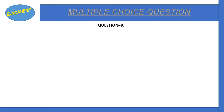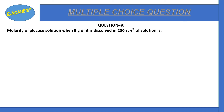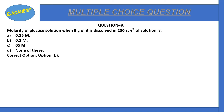Question number 8: What is the molarity of a glucose solution when 9 grams of it is dissolved in 250 cm³ of solution? Options are: a) 2.5 molar, b) 0.2 molar, c) 0.5 molar, d) none of these. Correct option is b) 0.2 molar.